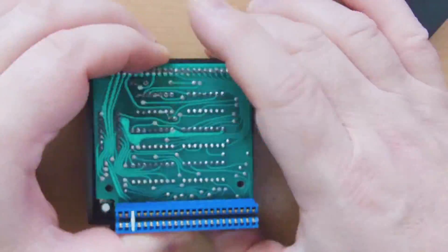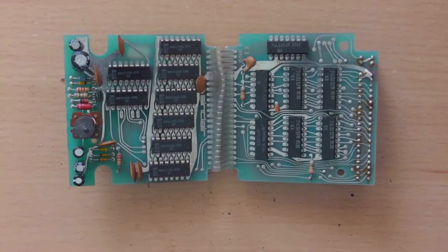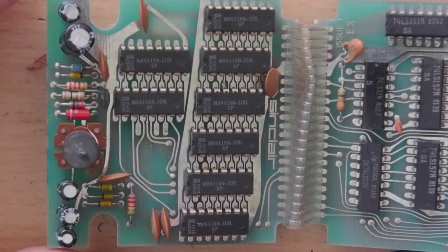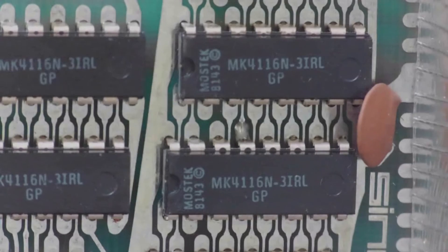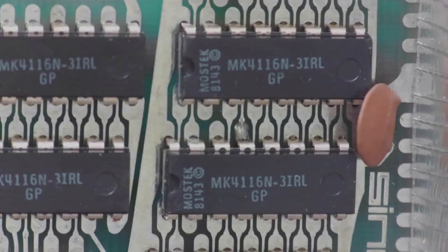There are two printed circuit boards crammed into this little box. We have some analog circuitry on the left, and not surprisingly, we have eight dynamic RAM chips. These are 4116, 16K by 1 bit dynamic RAMs, which we'll go over in quite a bit more detail later.